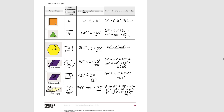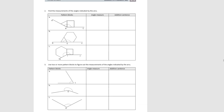Let's move on — you're going to be referring back to this page on the next ones. For A, the angle ABC has been fitted with two pattern blocks. One is the square, which we know is 90 degrees, and one is a triangle, which we know is 60 degrees. So altogether the angle measurement would be 150 degrees: 60 degrees plus 90 degrees equals 150. So we know that angle ABC equals 150 degrees, and the addition sentence is 60 degrees plus 90 degrees equals 150 degrees.